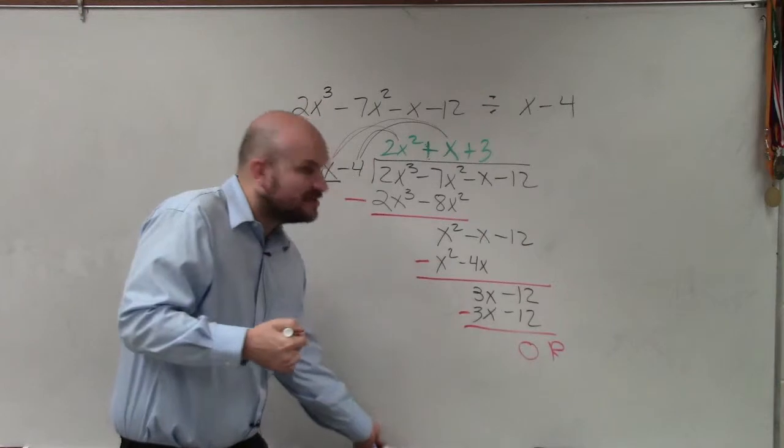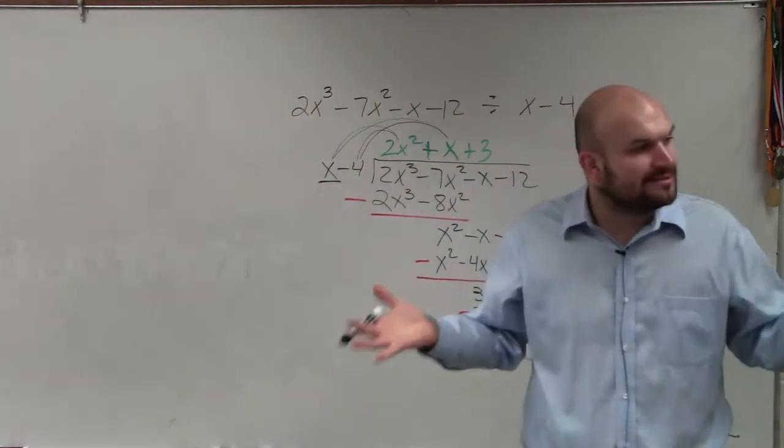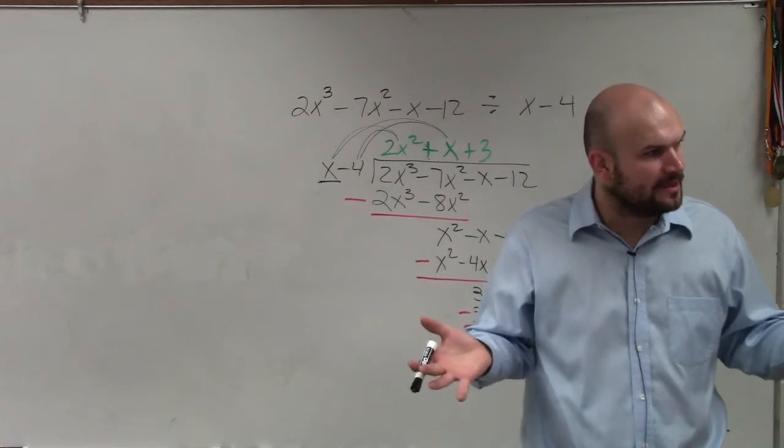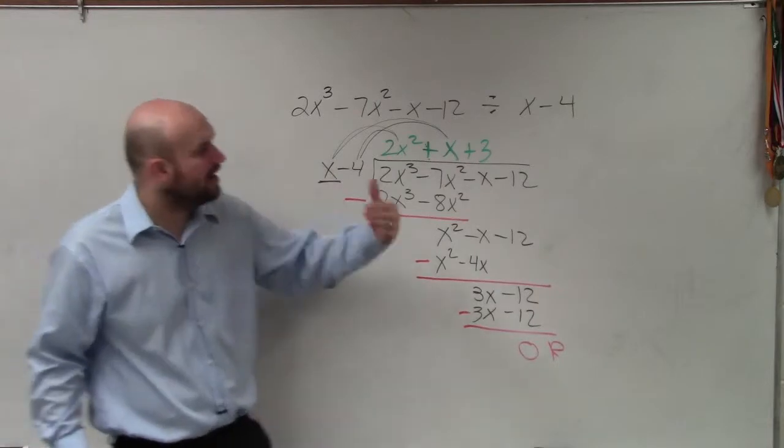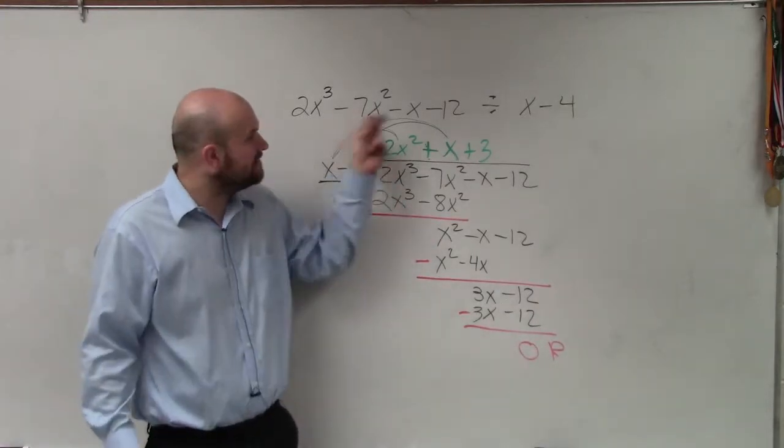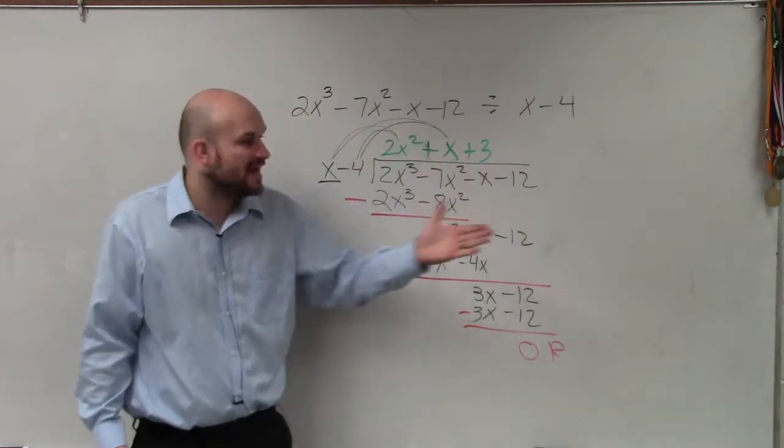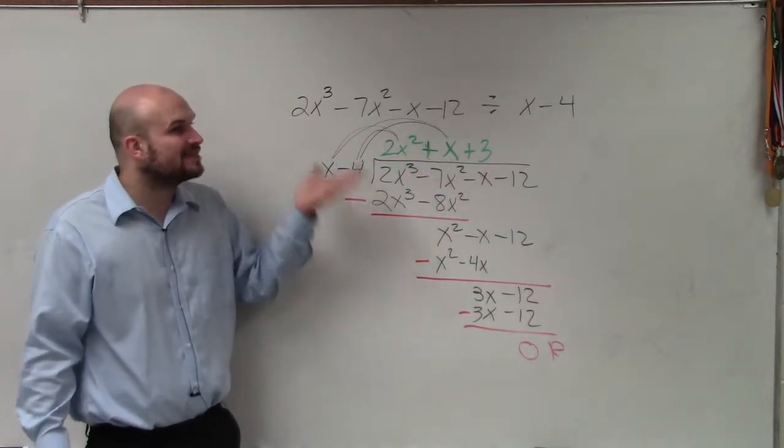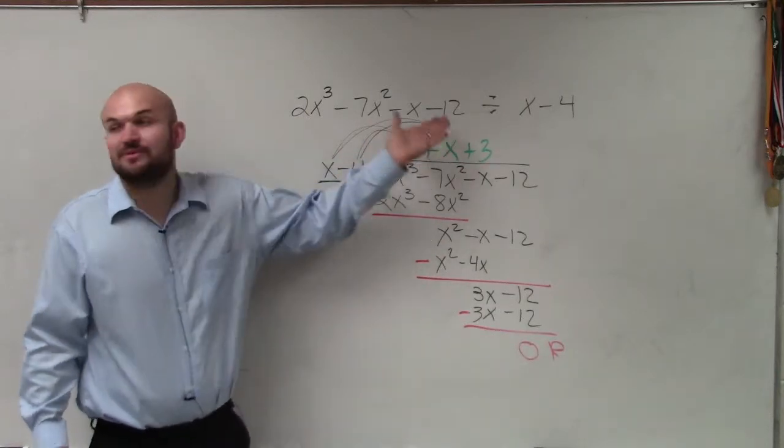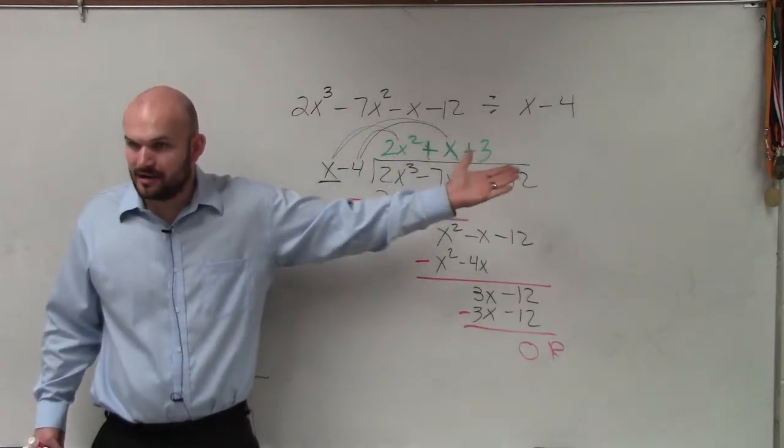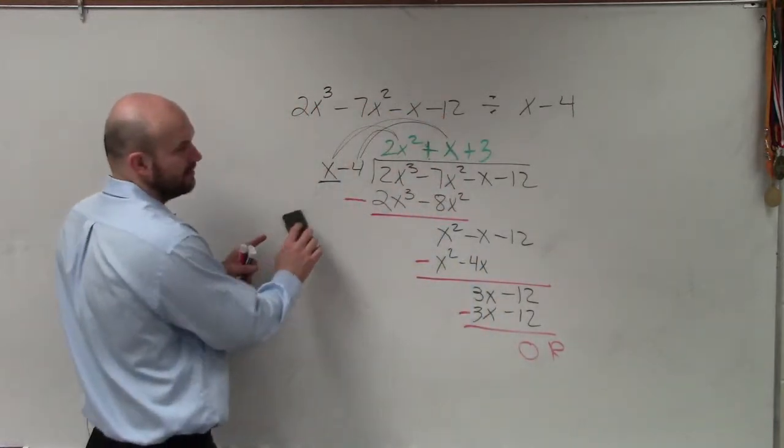So now, again, guys, doing long division is important, is helpful. But why is this so important? Because now we know what our factors are. So what are two factors of this polynomial? Well, how can we rewrite this as a product? We can now say that x minus 4 times what? 2x squared plus x plus 3 equals 0, right? So can I erase this to the top?